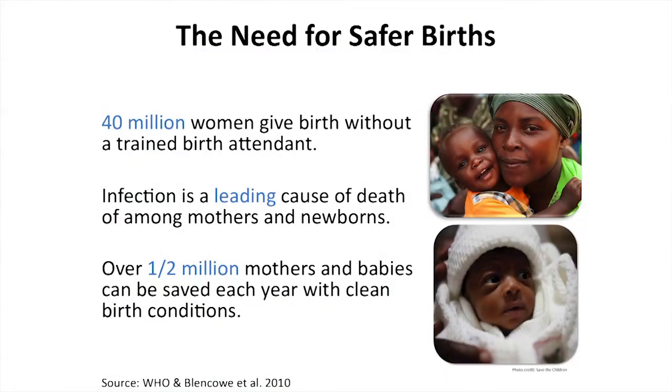So what is the need for safer births? Well, last year, 40 million women gave birth without a trained birth attendant. So here in the United States and in most developing countries, women give birth, usually in hospital settings, very often attended by a doctor or a midwife. Someone who has specialized skills at understanding how to ensure a baby comes into the world with minimal complications. And it happens in an area where there's minimal risk of infection occurring, but that's not the situation in most developing countries. So because they're coming into the world, because birth is happening in unclean birth conditions, infection is a leading cause of death in both mothers and newborns worldwide. And over half a million mothers and babies can be saved each year with the provision of clean birth conditions.